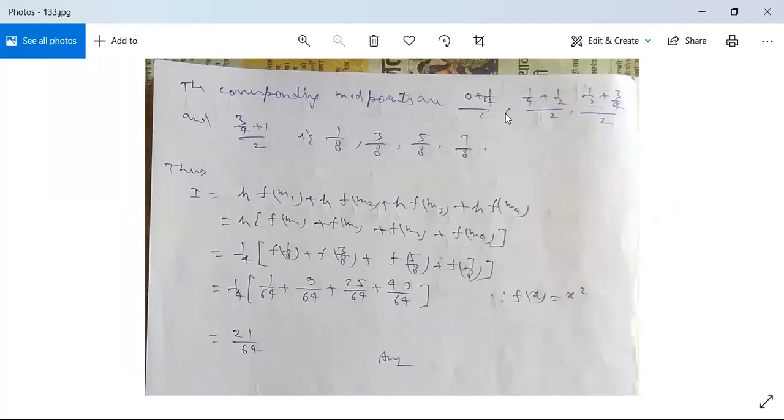The corresponding midpoints are: m₁ is (0 plus 1/4)/2 equals 1/8, m₂ is (1/4 plus 1/2)/2 equals 3/8, m₃ is (1/2 plus 3/4)/2 equals 5/8, and m₄ is (3/4 plus 1)/2 equals 7/8. These are the four values of midpoints m₁, m₂, m₃, and m₄.